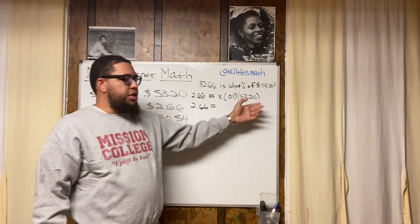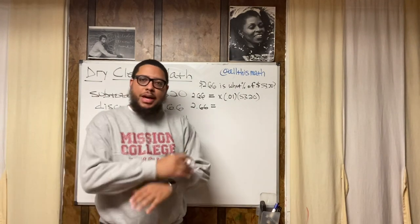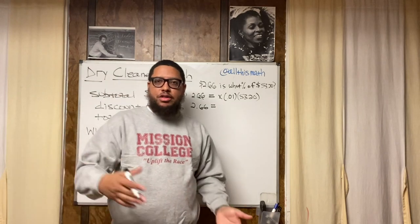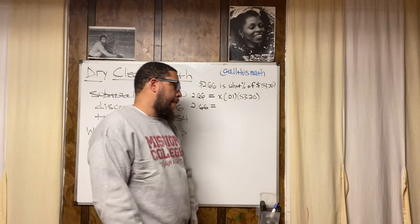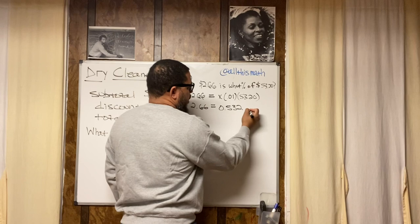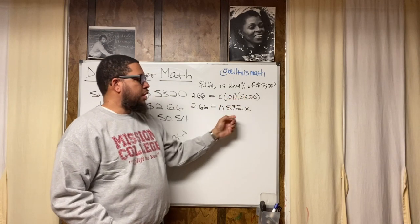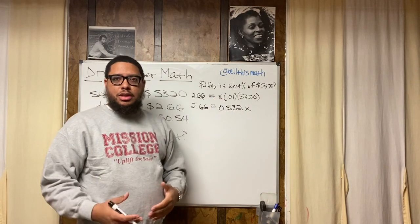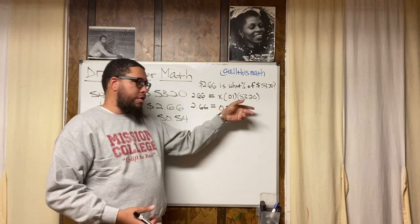If you had to split $53.20 among 100 people evenly, everyone would get about 53 cents. So we end up with 0.532 times x. Numbers called coefficients come first, variables come second — that's why I switched it around. So we have: 2.66 = 0.532x.